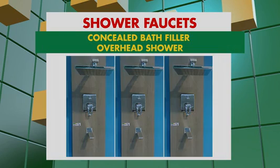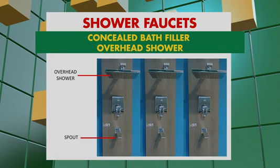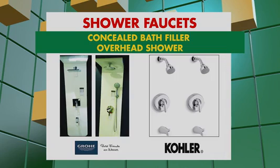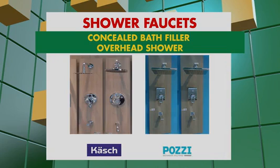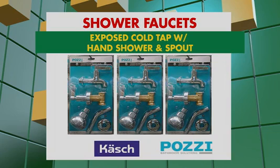Ang concealed bath filler with overhead shower ay may dalawang functions: ang combination ng overhead shower at ng spout. At ito ay available sa Grohe, Kohler, Cash, at Posee brand. At ang concealed cold top with overhead shower and spout ay available naman sa Cash at Posee brand.